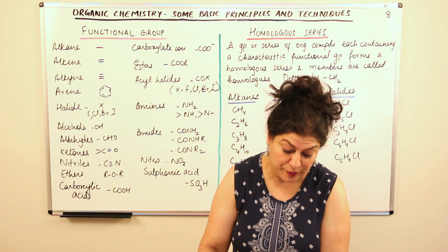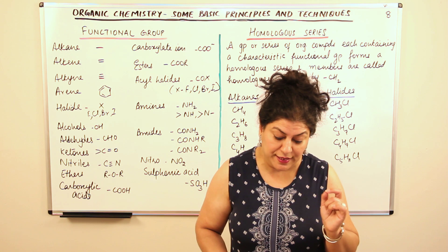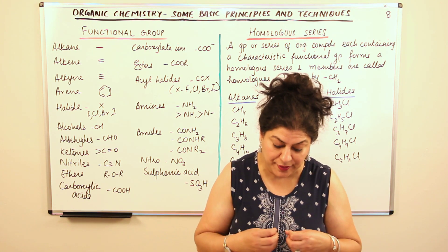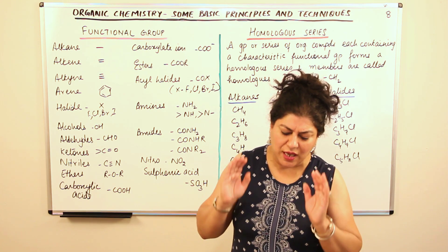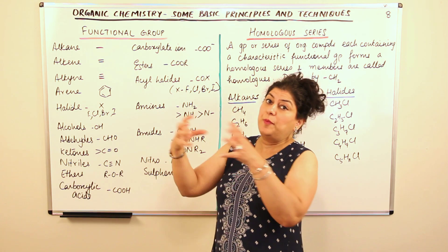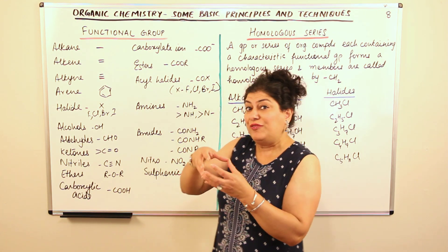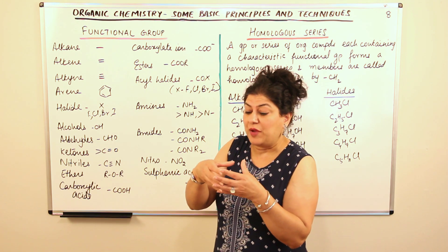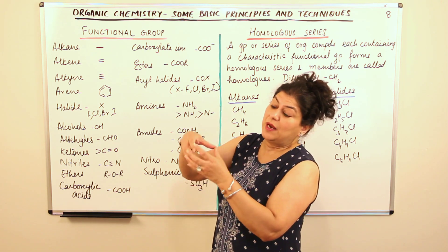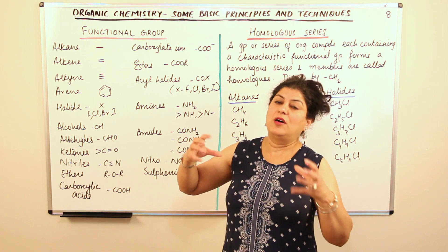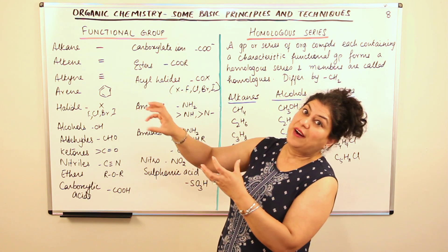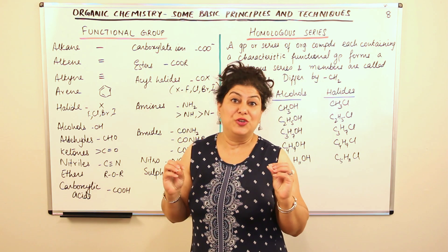So, how would you define a functional group? A functional group may be defined as an atom or a group of atoms joined in a specific manner, which is responsible for the characteristic chemical properties of the organic compounds. They combine in a specific manner, and because of that specific manner in which they are connected to the hydrocarbon, they become responsible for certain characteristic properties, and that class of compounds is identified as compounds of that functional group.